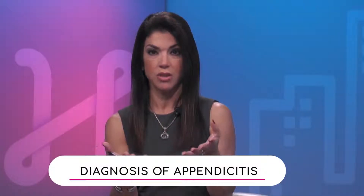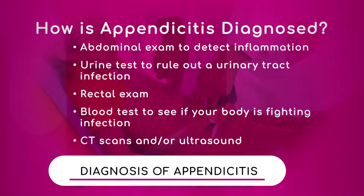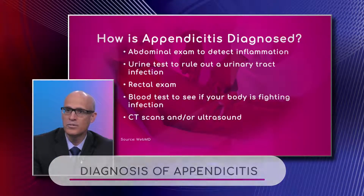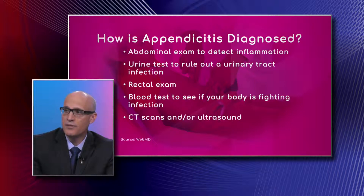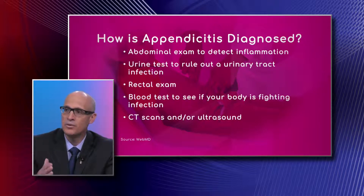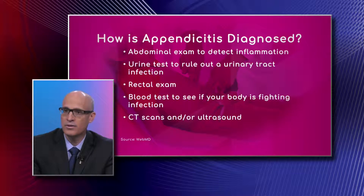Let's look at some of the tests that are usually used by nurse practitioners and doctors to determine the diagnosis. After the history, which is probably the most important component in making the diagnosis, the abdominal exam is very important. We look for signs of localized inflammation in the right lower quadrant. We see that the muscle in that side of the abdomen becomes rigid, secondary to the inflammation, and that's usually an indication that there is peritonitis going on.